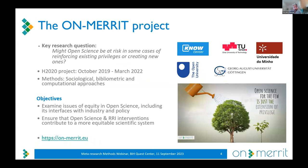The ON MERIT project ran from 2019 to 2022. The key research question was whether open science might actually be at risk of reinforcing existing privileges or creating new ones. Equity is a very commonly stated aim of open science, but we were noticing it might actually be in danger of threatening equity rather than helping. We used a broad array of research methods — sociological, bibliometric, and computational — to look at issues of equity in open science, including interfaces with industry and policy.